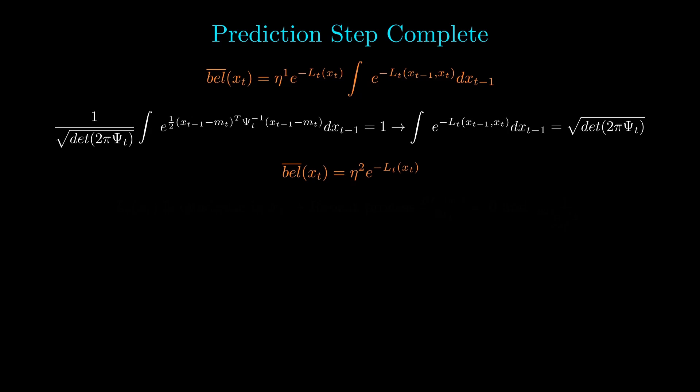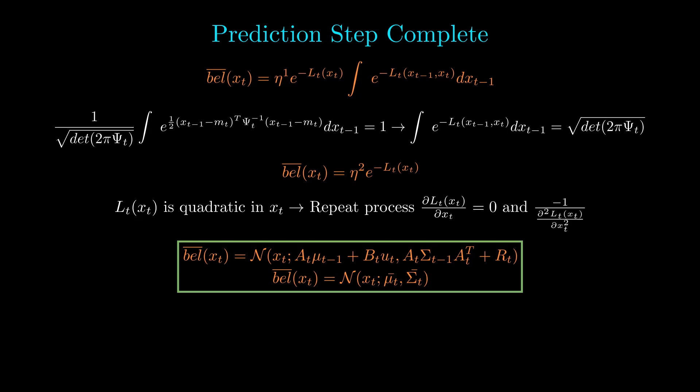Following, we are left with another eta and a single exponential term. We now notice that Lt of Xt is also quadratic in Xt. Thus, we repeat the process of finding the mean and covariance as we did on the last slide to arrive at, what do you know, another Gaussian distribution, where we will label the intermediate distribution with mean mu bar and covariance sigma bar.